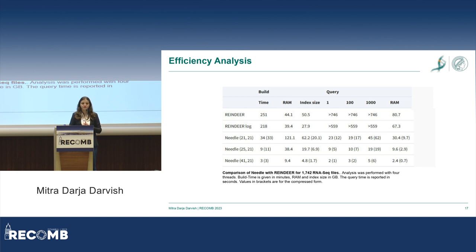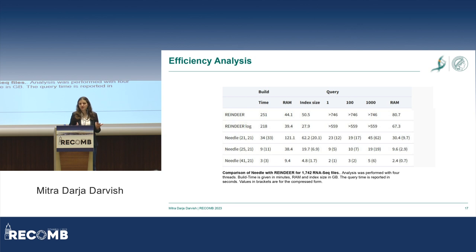As I said, Kallisto and Salmon are not building an index, so we are not comparing to them here. We are comparing to a tool called Reindeer, which tackles the same problem. They have two versions, which is why there are two entries for them.